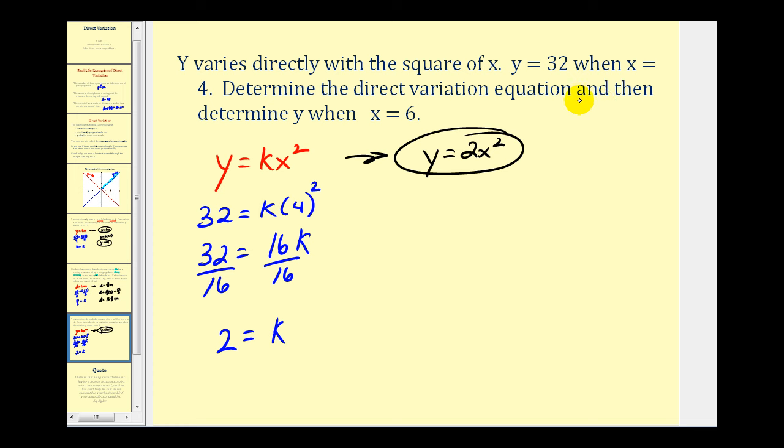And now we can answer the question, what is Y when X equals 6? So we replace X with 6. Remember here, we square 6 before we multiply. This would be 36 times 2. So Y would be equal to 72 when X equals 6. Okay, that'll do it for this video. I hope you found this helpful.